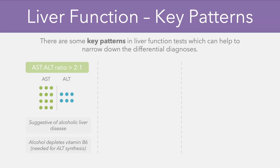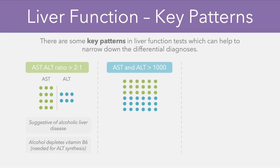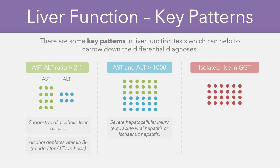Additionally, if a patient has an AST or ALT value greater than 1000, it's highly indicative of an acute severe hepatocellular injury — for example acute hepatitis or ischemic hepatitis. Finally, if someone has an isolated rise in their GGT level, it's suggestive of chronic alcohol consumption, and this happens because alcohol induces one of the enzymes required for GGT synthesis.